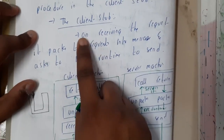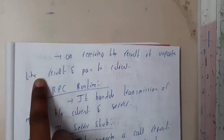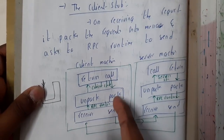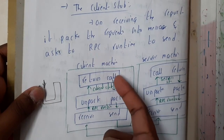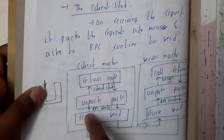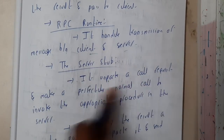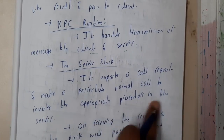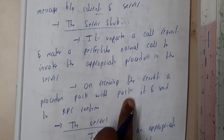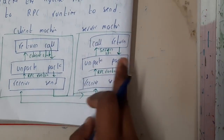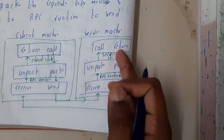Each phase has two steps — packing and unpacking. Whenever you are calling something it will pack and send; whatever is received it will unpack and return the result. The RPC runtime transmits messages between client and server. The server stub unpacks the call request and makes a normal call to invoke the appropriate procedure in the server. On receiving the result it does the reverse — packs and sends back to the RPC runtime. On the server side: unpacking is done on arrival, and packing is done on return.